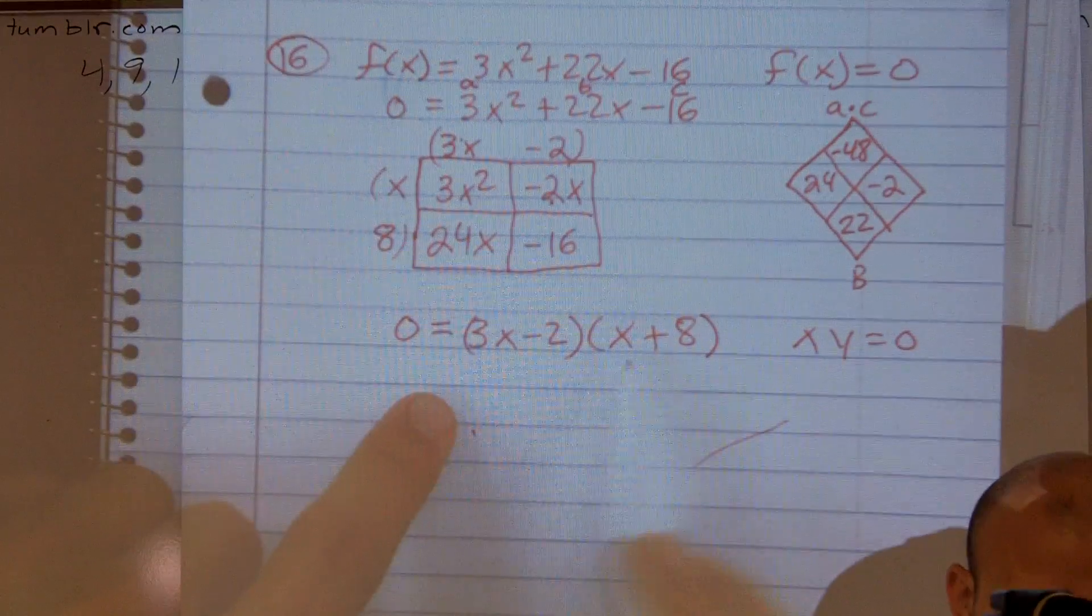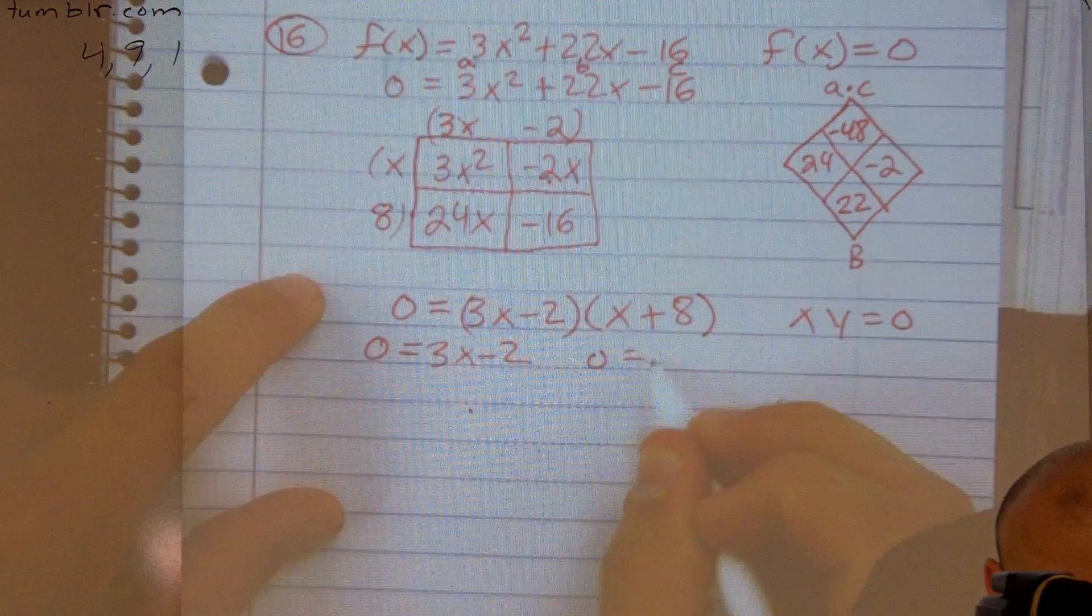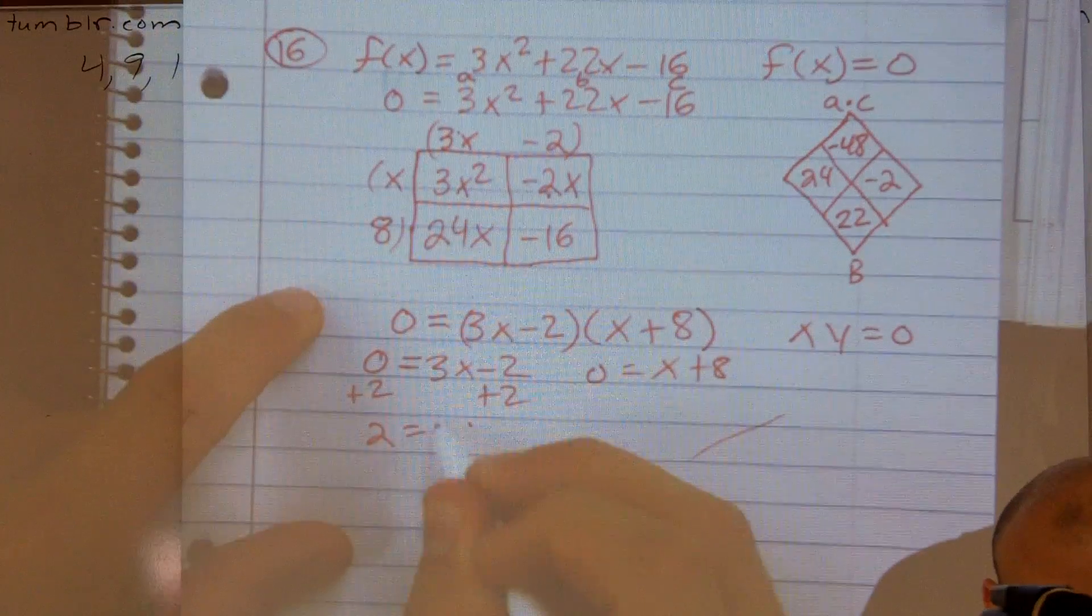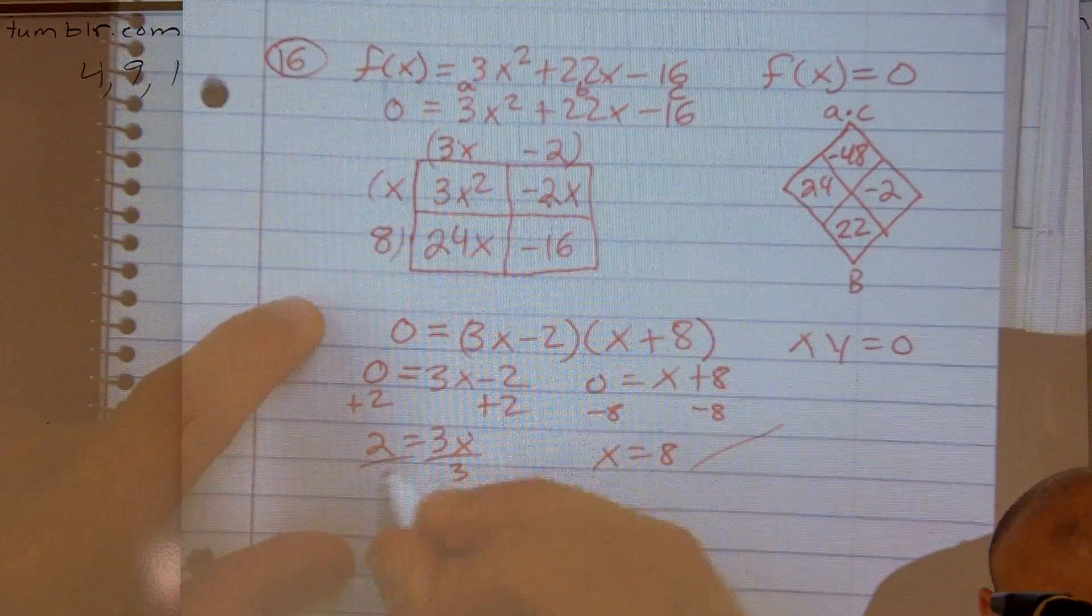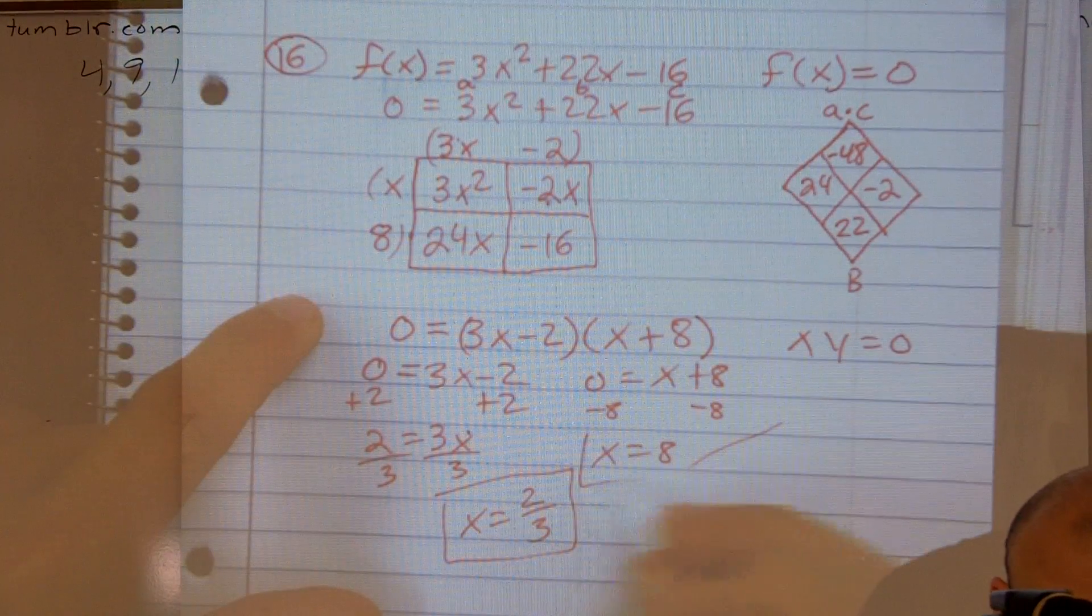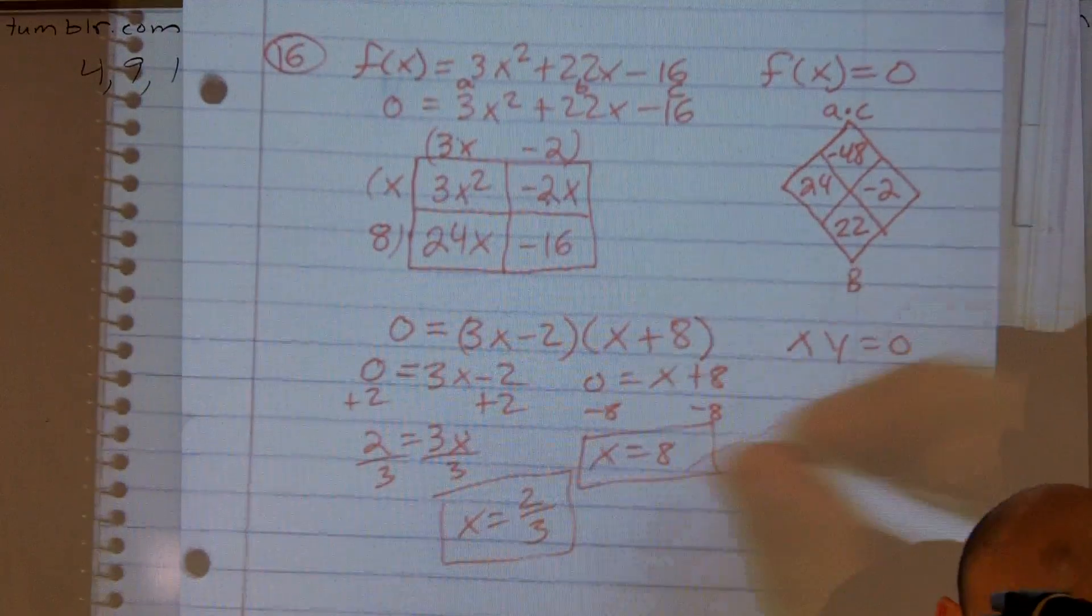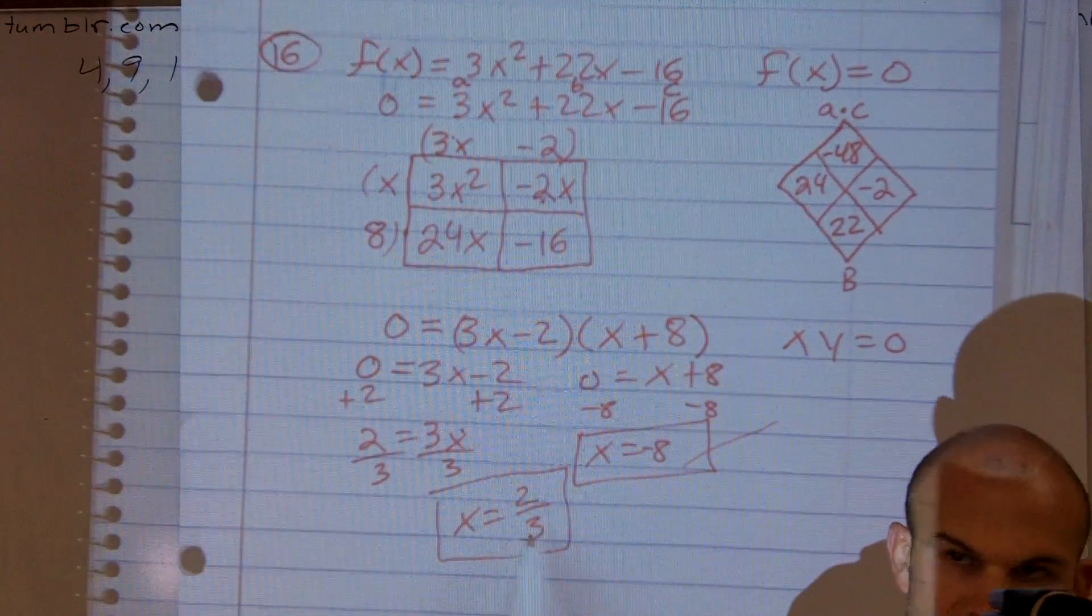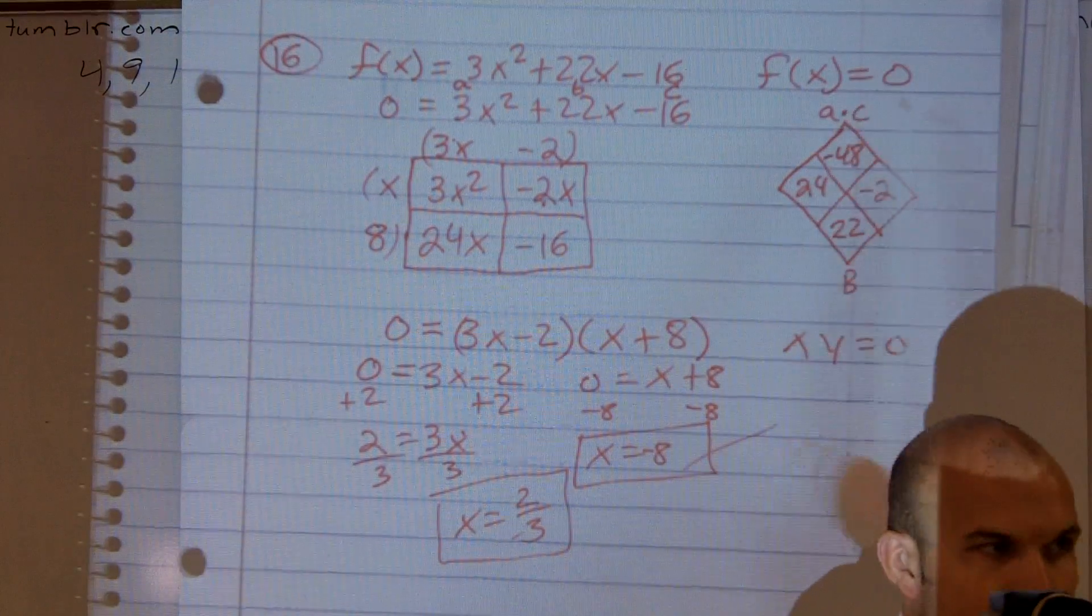So then just to finish this off, we know that either 3x minus 2 equals 0 or 0 equals x plus 8. So when I solve for x, my possible zeros are x equals 2/3 and x equals negative 8. So therefore, my possible zeros for the function are negative 8 and 2/3rds. And we'll be able to determine if they're zeros by plugging them back to the equation. And if they give us an f of x equals 0, then we know it works.